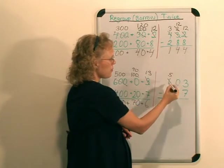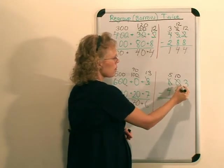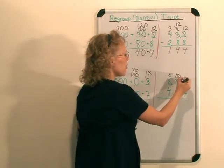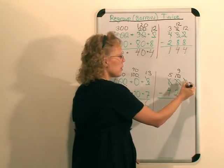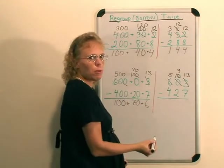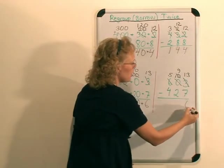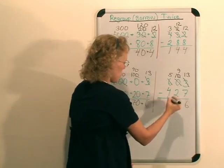And it looks similar here. 3 minus 7 you cannot do, you cannot borrow from the tens, so the 200 becomes 10 tens. Then you take one of the tens, leaves 9 tens, and here you get 13 ones. And then 13 minus 7 is 6, 9 minus 2 is 7, 5 minus 4 is 1.